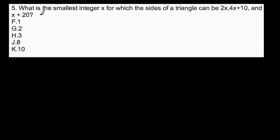In this problem we're asked, what is the smallest integer x for which the sides of a triangle can be 2x, 4x plus 10, and x plus 20? This is actually my second attempt at this problem. I realized, thanks to a viewer comment, that I had made a mistake. So let's take a look at this and explain the premise of it and then solve it.